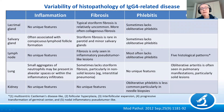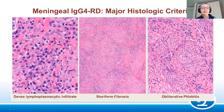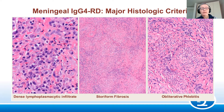The same is true in the meninges. The case I've shown you is practically the only one I've seen with all three classic definite major histological criteria together: dense lymphoplasmacytic inflammation, storiform fibrosis, and obliterative phlebitis.